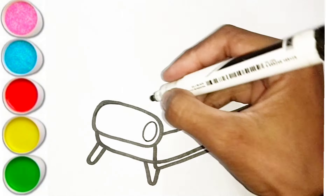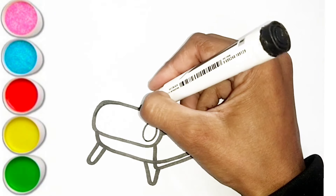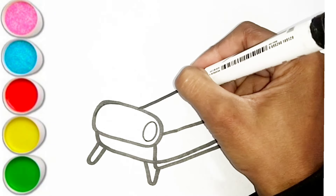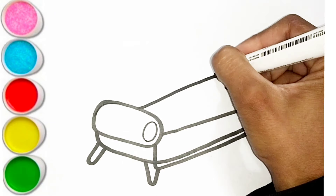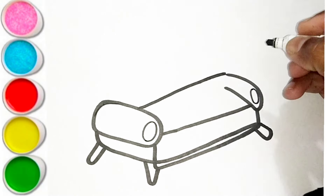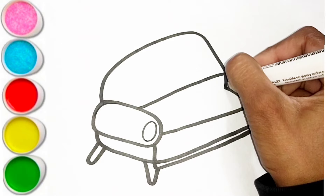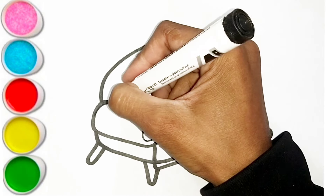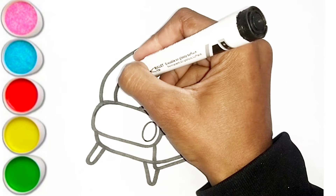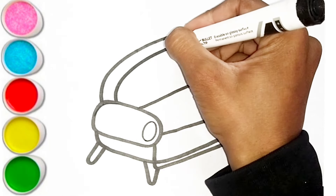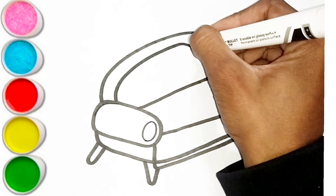M is for Mat, M-M-Mat. N is for Net, N-N-Net. O is for Orange, O-O-Orange. P is for Pet, P-P-Pet.